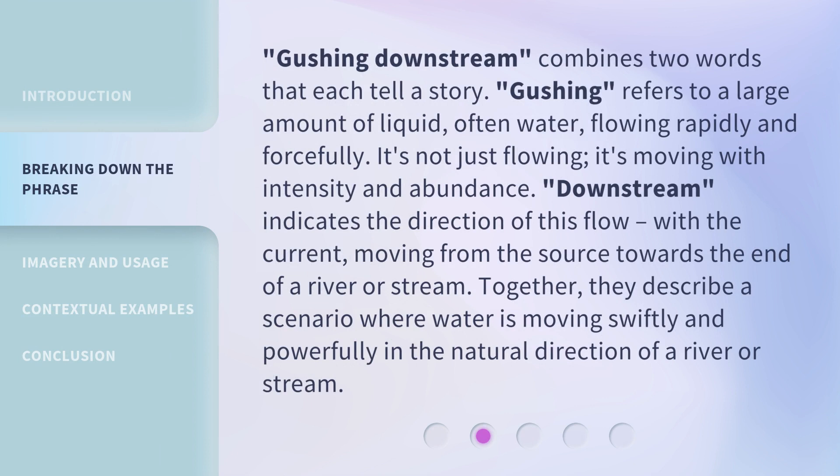Gushing Downstream combines two words that each tell a story. Gushing refers to a large amount of liquid, often water, flowing rapidly and forcefully. It's not just flowing — it's moving with intensity and abundance. Downstream indicates the direction of this flow, with the current moving from the source towards the end of a river or stream. Together, they describe a scenario where water is moving swiftly and powerfully in the natural direction of a river or stream.